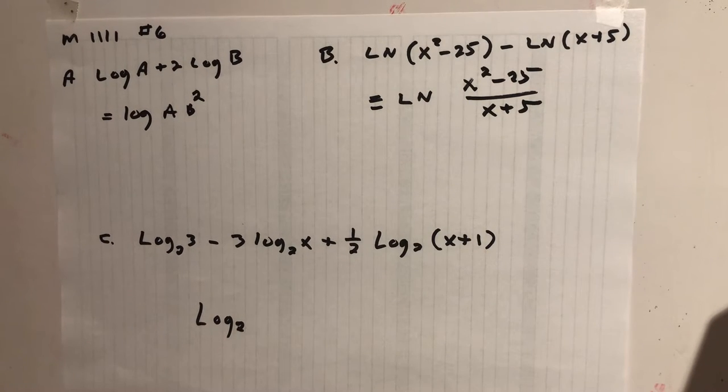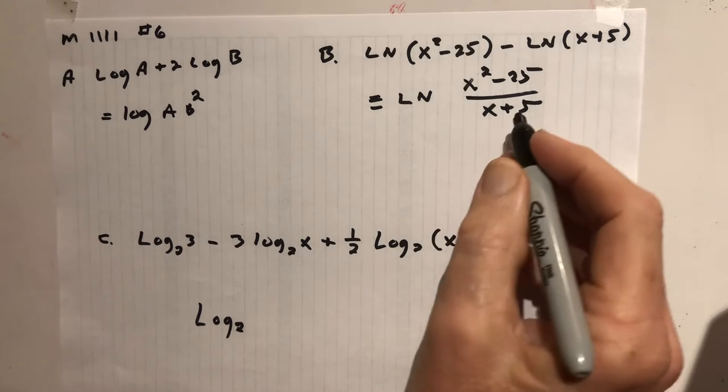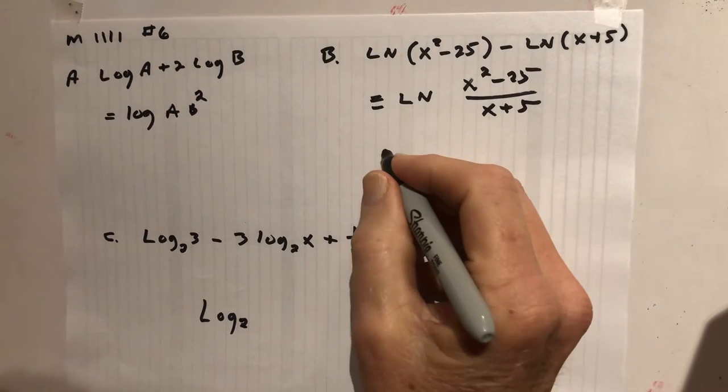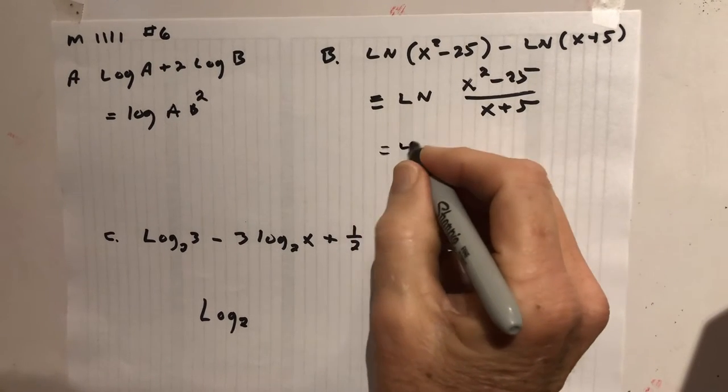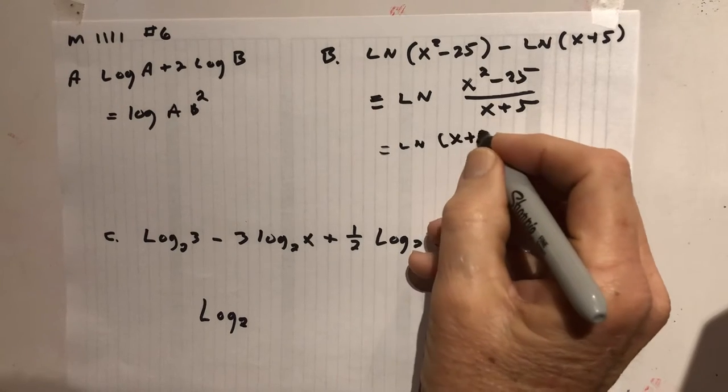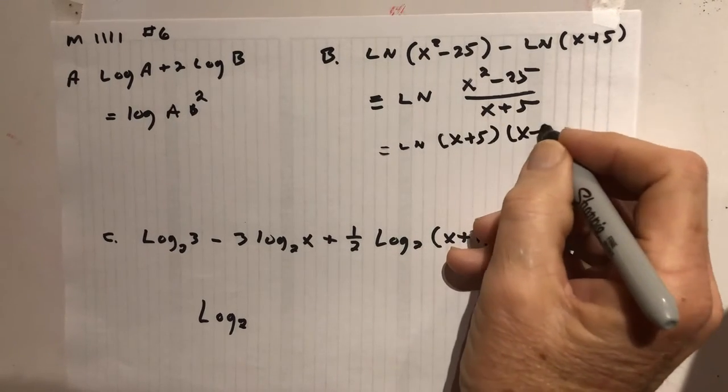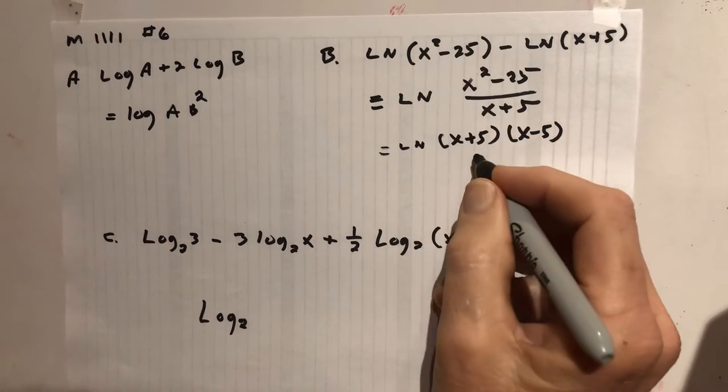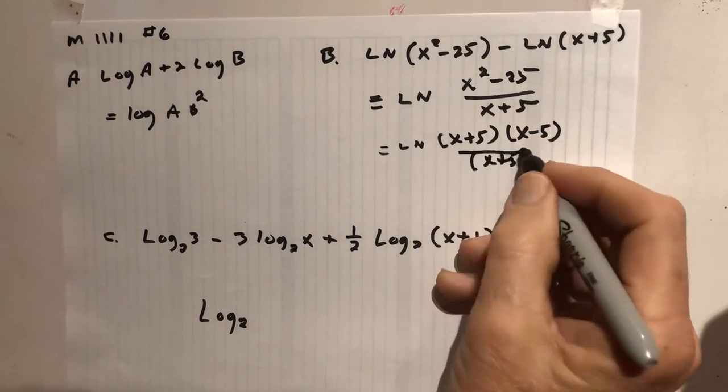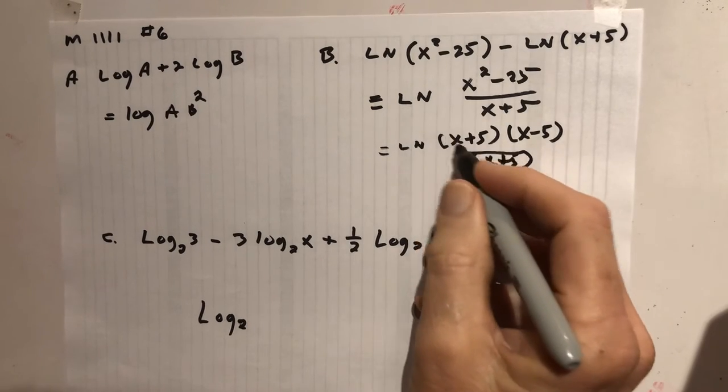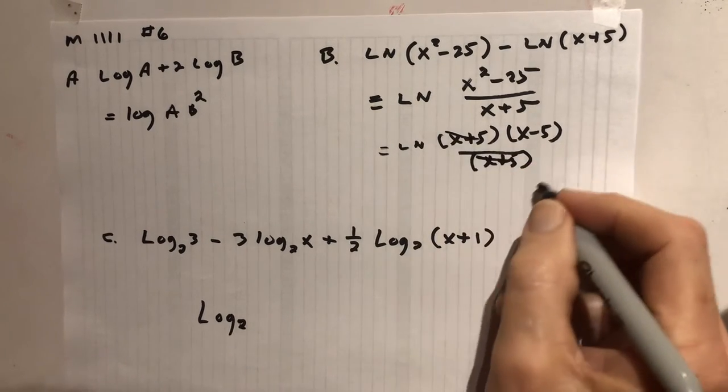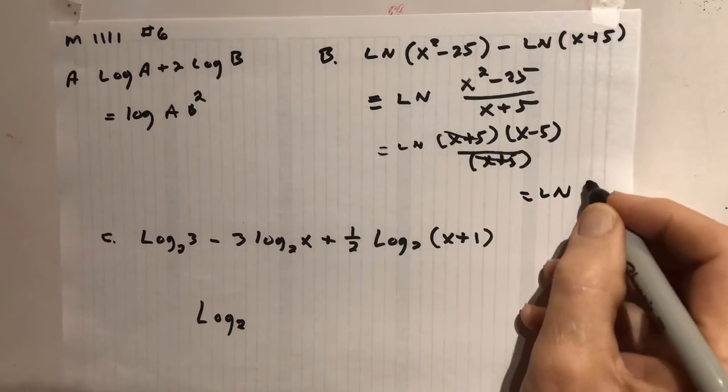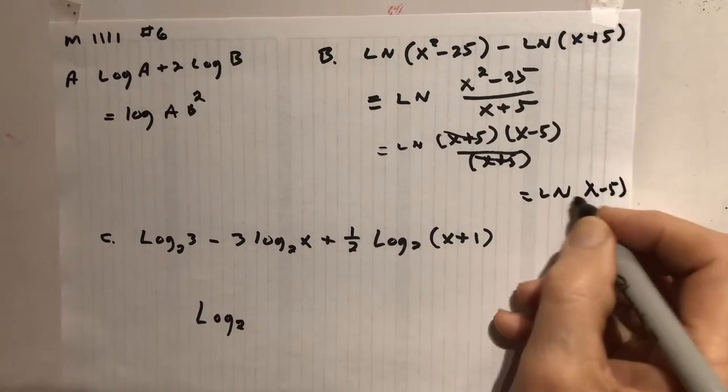Now this one is actually a little bit harder because that will reduce. On the test, I'll try and make one where it doesn't reduce. This here, the top breaks down into x plus 5 and x minus 5. x squared minus 25 is these two and we still have the x plus 5 on bottom. So we can cancel the x plus 5. So the final answer would be ln of x minus 5.